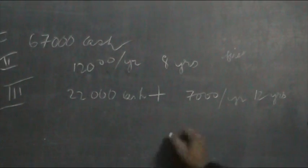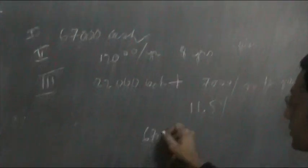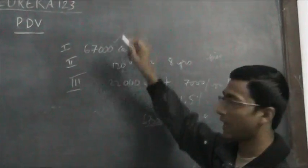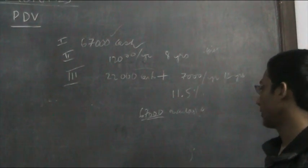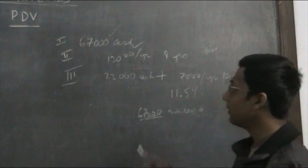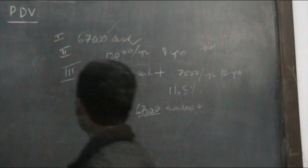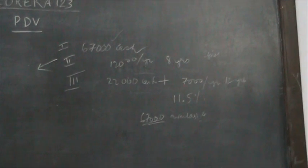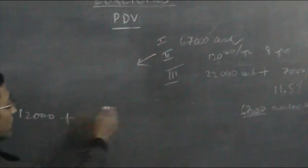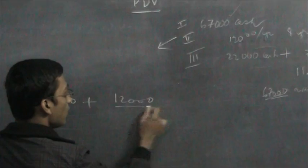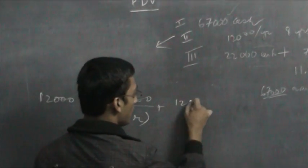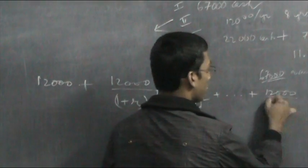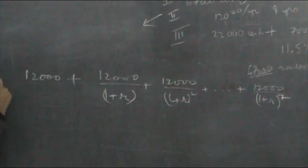The interest rate is 11.5% and you have $67,000 available at the beginning. You can directly pay $67,000 as cash, or take option 2 or option 3. We will choose the option whose present discounted value is the minimum, so that we pay the least. For option 2, paying $12,000 now and then $12,000 for the next 7 years, the PDV is 12,000 + 12,000/(1+r) + ... + 12,000/(1+r)^7.